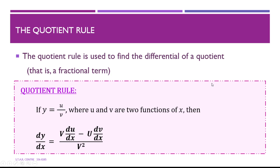The quotient rule is used to find the differential of a quotient, that is a fractional term. So if I have y equal u over v, where u and v are two functions of x, then dy/dx is equal to v·du/dx minus u·dv/dx over v squared. It's similar to the product rule, where we identify what u and v are, differentiate each one, and then substitute into the formula.